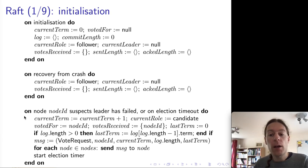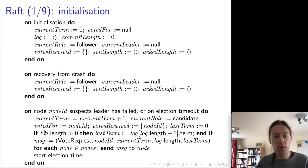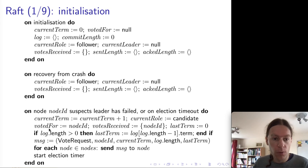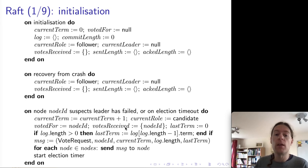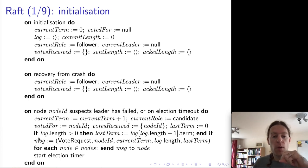When a node decides it's time to start an election, it increments the current term, sets its current role to candidate, and like in every good election, votes for itself — setting the votedFor variable to its own node ID. It has a set of node IDs recording the votes received in favor of itself, and it puts its own node ID as the first member of that set. The variable lastTerm is initially zero, but if the length of the log is greater than zero, we set lastTerm to the term field of the last log entry.